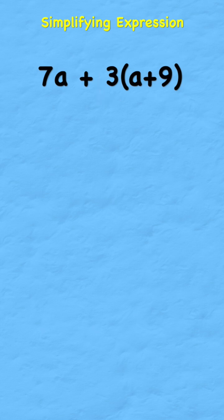When distributing this bracket, I'm going to look at my 3 and distribute it to the a and then to the 9. When we have a term next to a bracket like this without any other operation symbol like an addition or subtraction sign, we know it has to be multiplication.